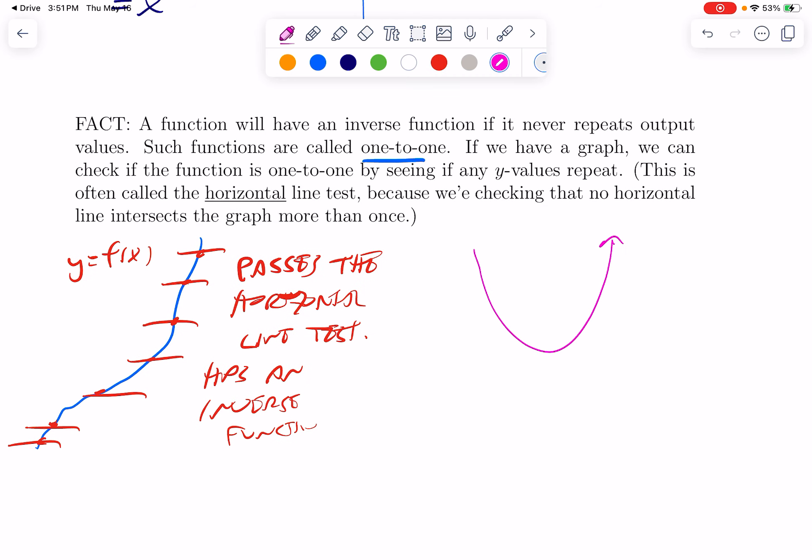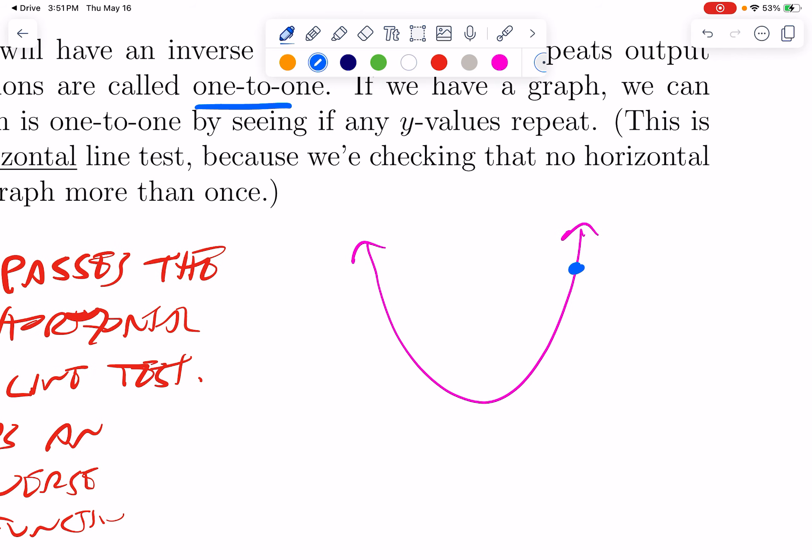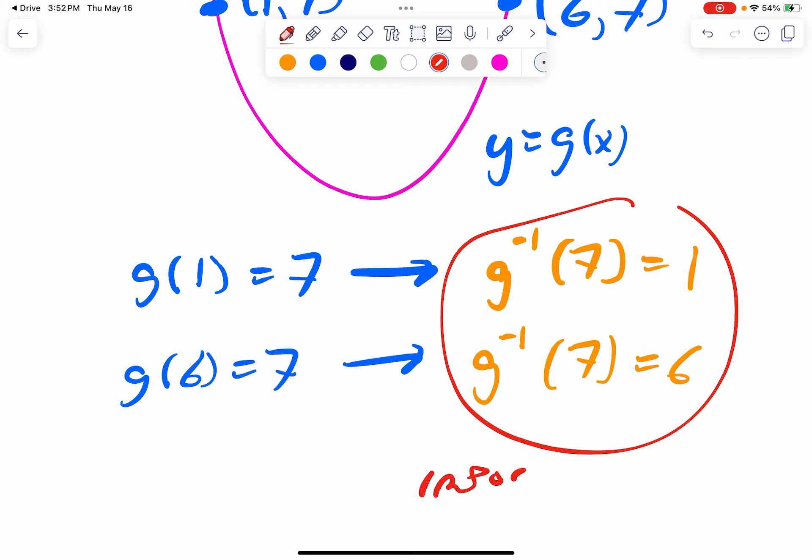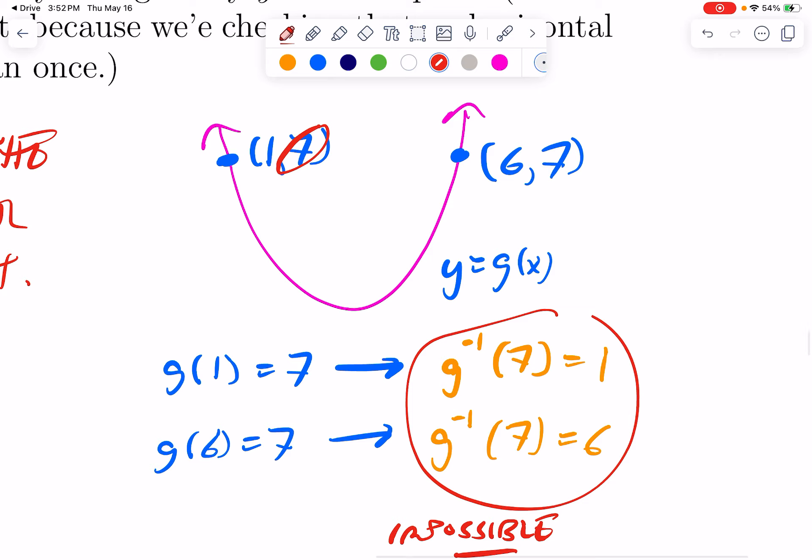If we have something that fails the horizontal line test, right? Imagine that I have two points here with the same y value. Maybe here's 6 comma 7, here's 1 comma 7 on a function G. So, we're noticing that G of 1 is equal to 7. And G of 6 is equal to 7. If there were an inverse function, I should be able to turn this backwards. If G of 1 is equal to 7, that means for the inverse version, G inverse of 7 should be equal to 1. Input and output get reversed. But by that same logic, for this second fact, G inverse of 7 is 6. And here we have a contradiction. No function can give us two different answers. People will sometimes talk about the idea of an inverse relation. But there is no function that is the inverse of G. And we could notice that by noticing we have a repeated y value for G.